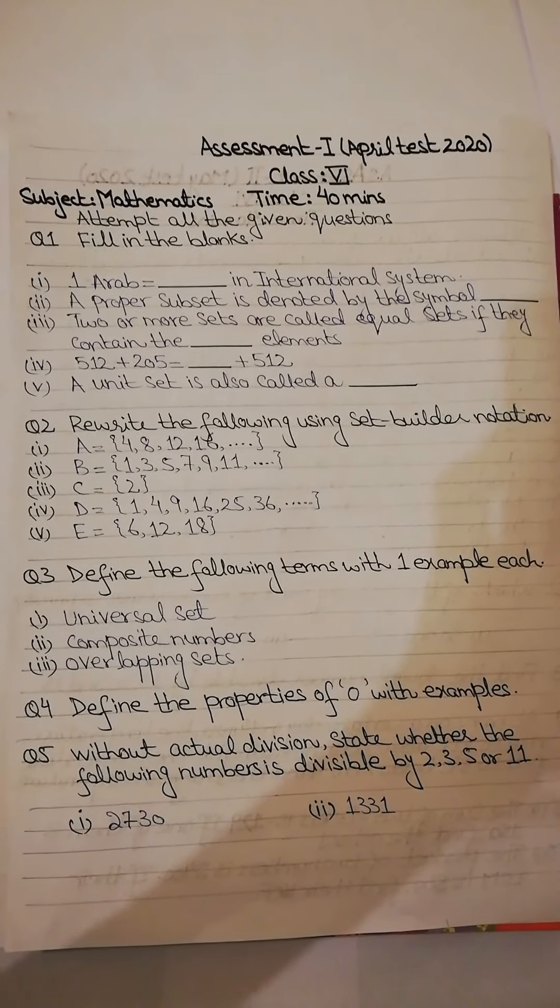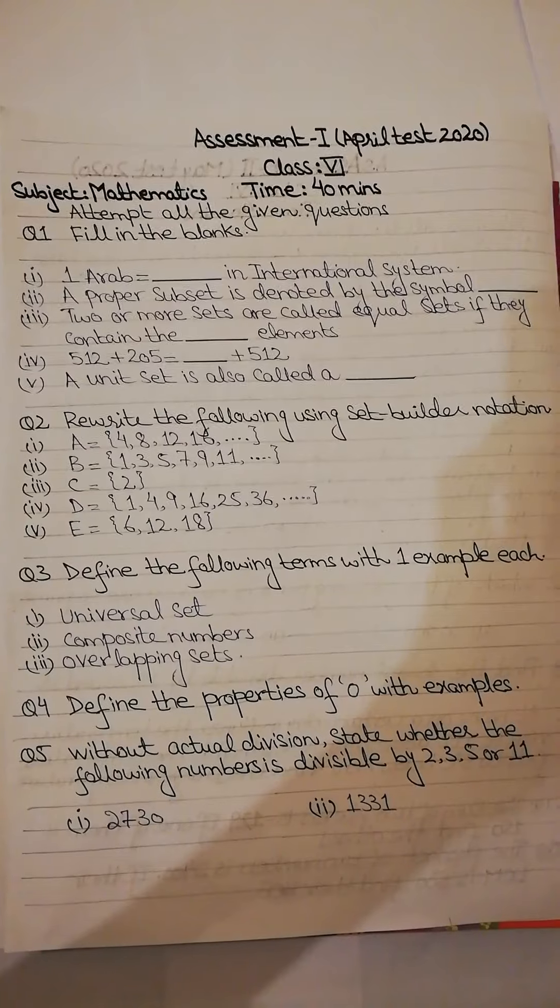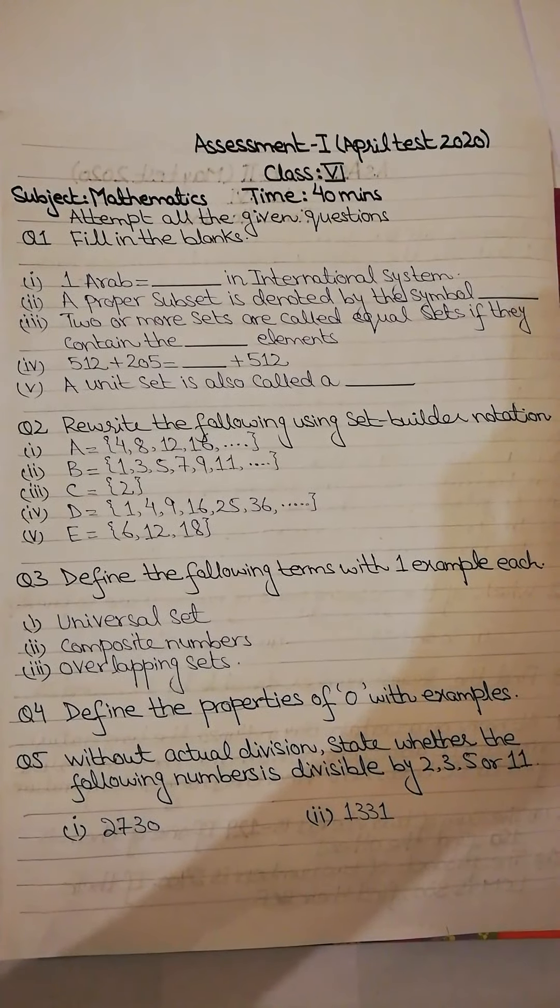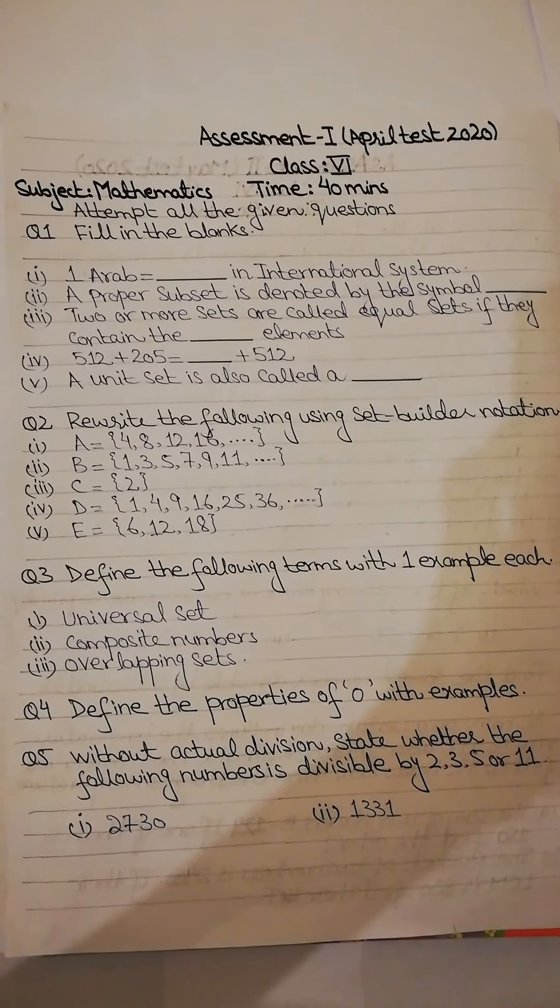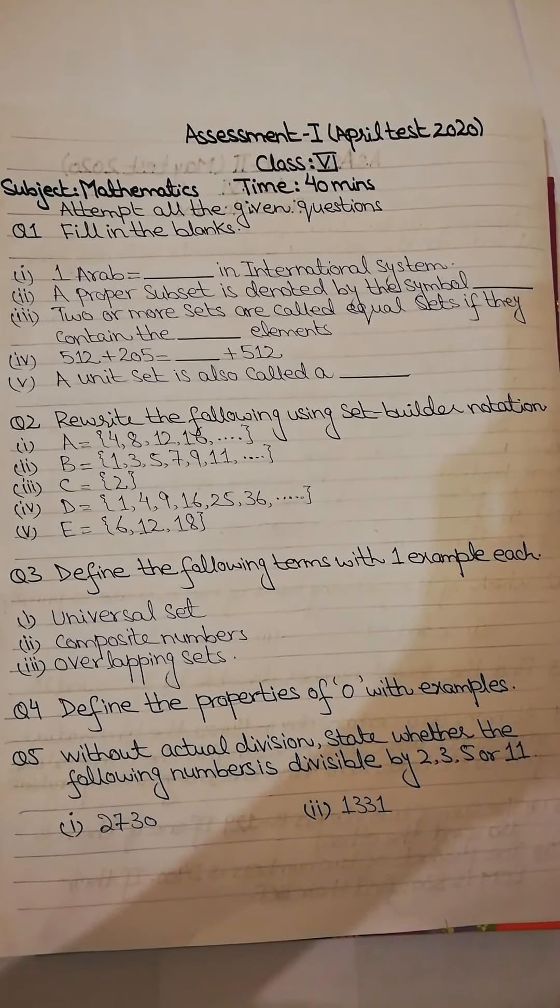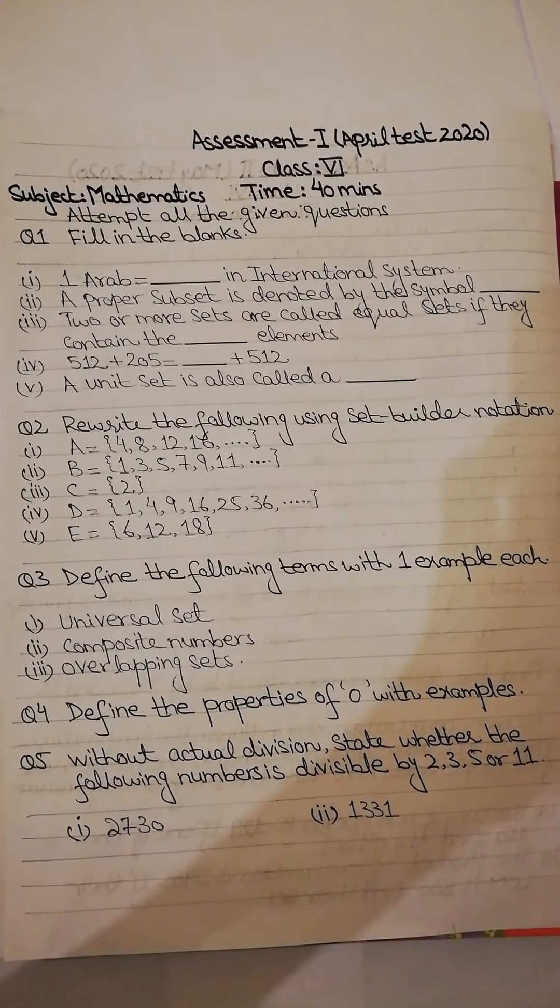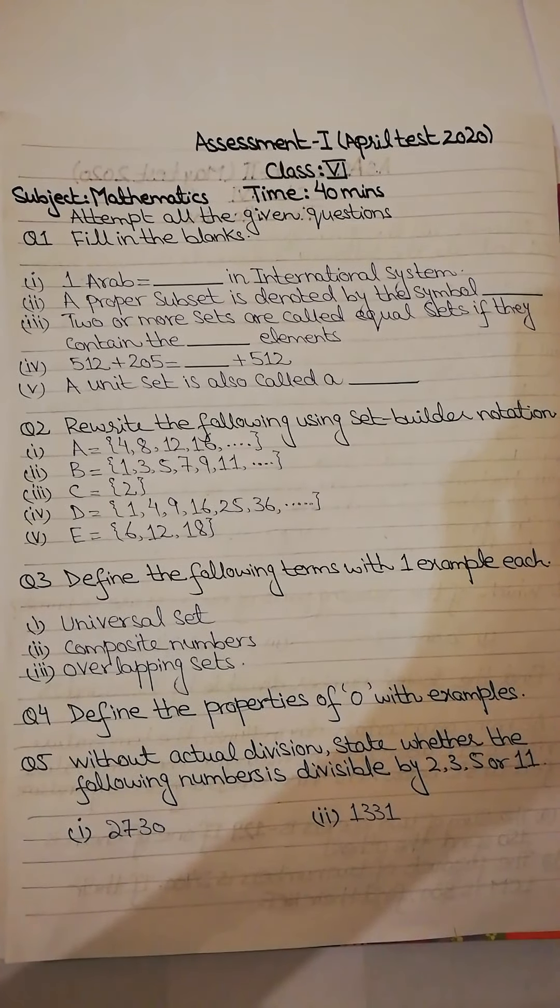Second is, a proper subset is denoted by the symbol dash. Which symbol is used for proper subset? You will write that symbol in your blanks. Third is, two or more sets are called equal sets if they contain the dash elements.